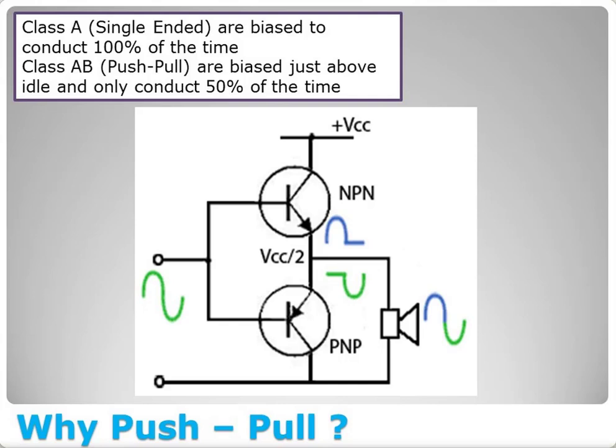Think of it like driving a car: a Class A amplifier is like keeping your foot on the gas pedal floored all the time, conducting 100% whether there's a signal or not. Class B is like coasting down a hill with no gas. Class AB push-pull is just above idle — you're not amplifying anything when there's no signal.